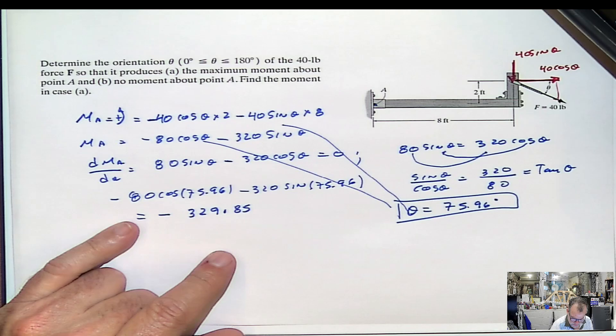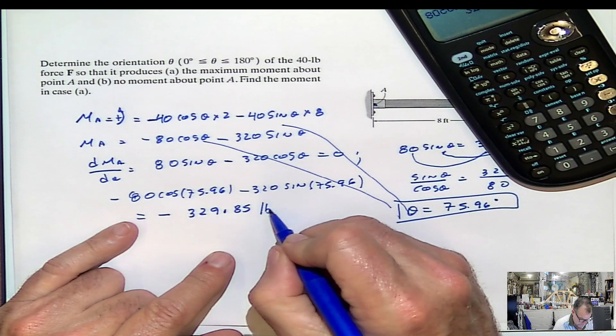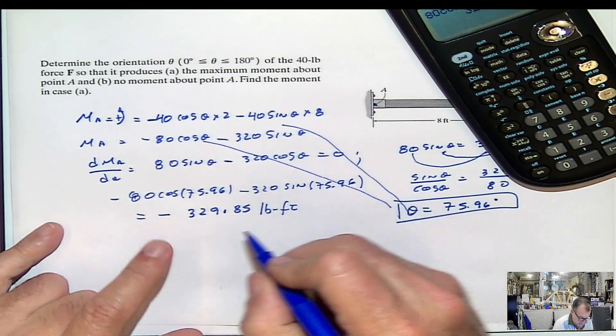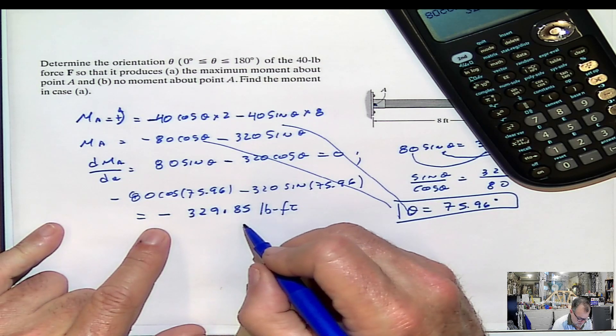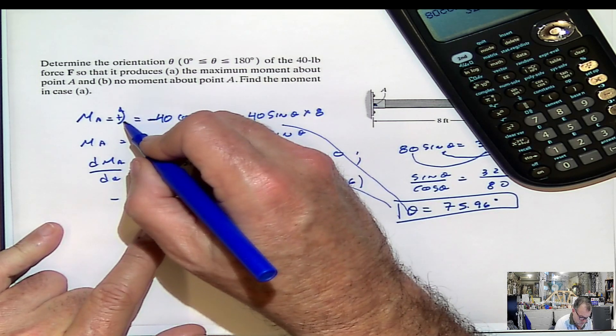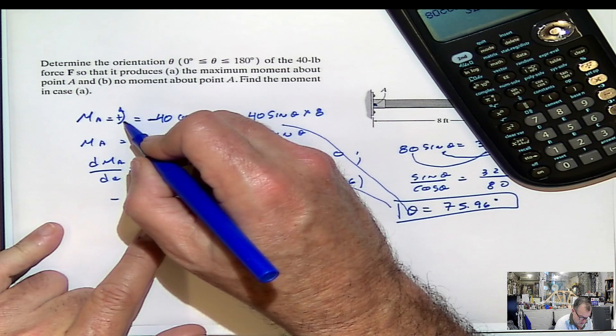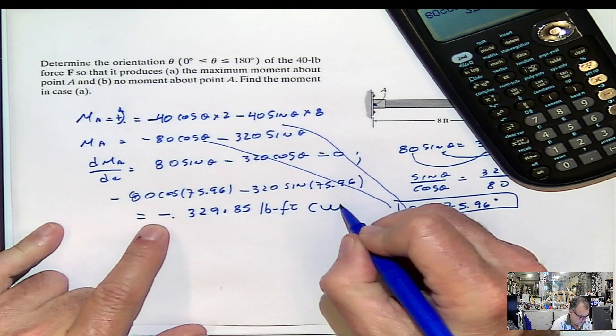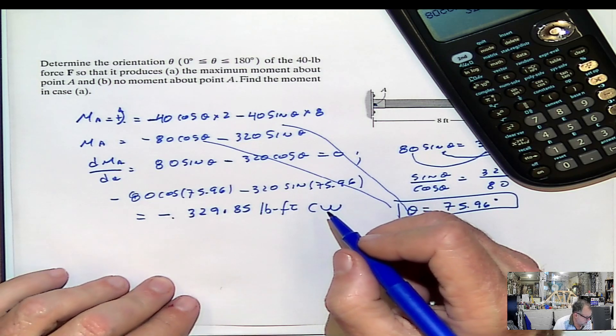0.85. I'm just thinking of the units, pounds per foot. That means that this moment at A is negative. If we assume positive as counterclockwise, that means that it's going to be in the clockwise direction.